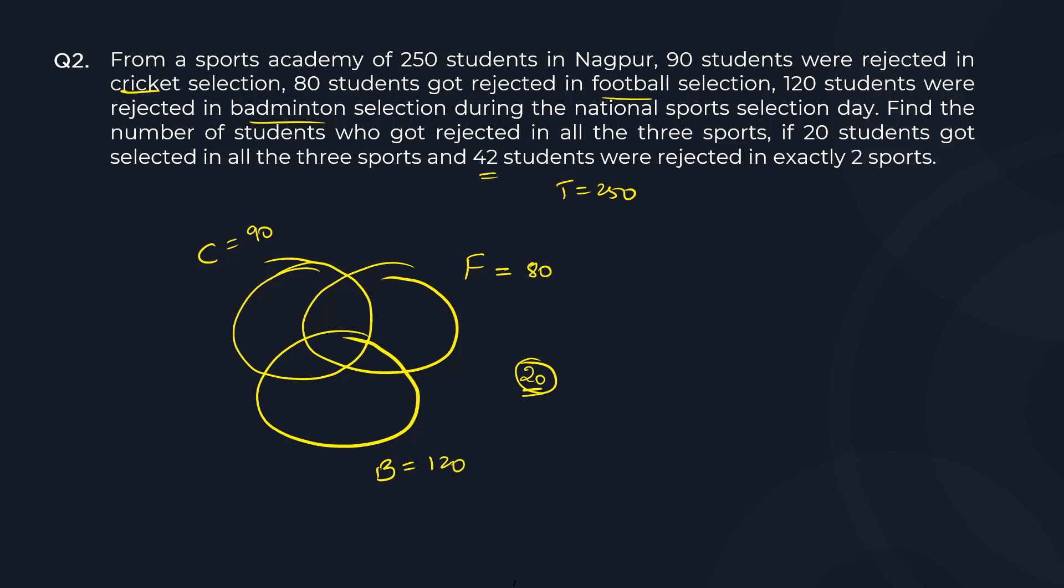And 42 students are rejected in exactly two sports. So exactly two sports. Let's call this as A, B, C, D, E, F, and G. So D plus E plus F is given to you as 42. And you want to find basically the value of G.